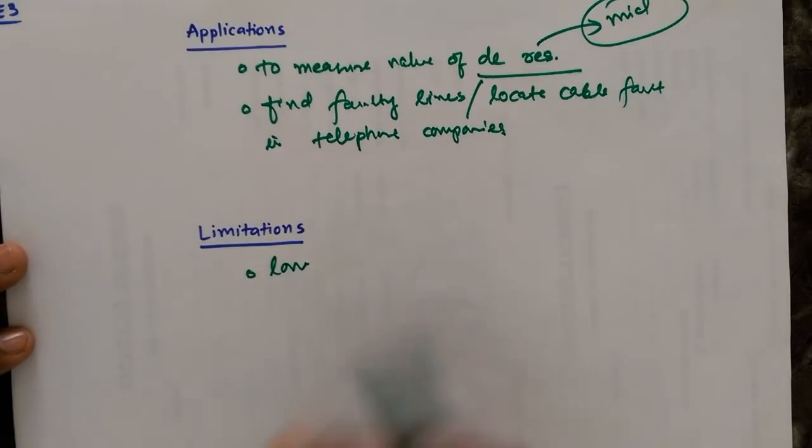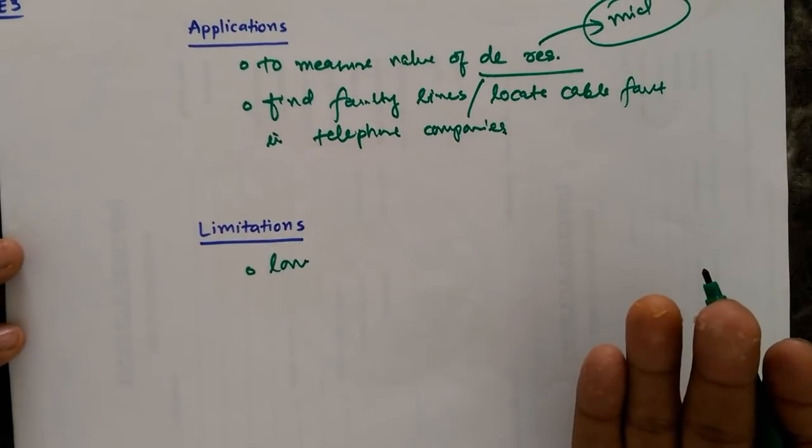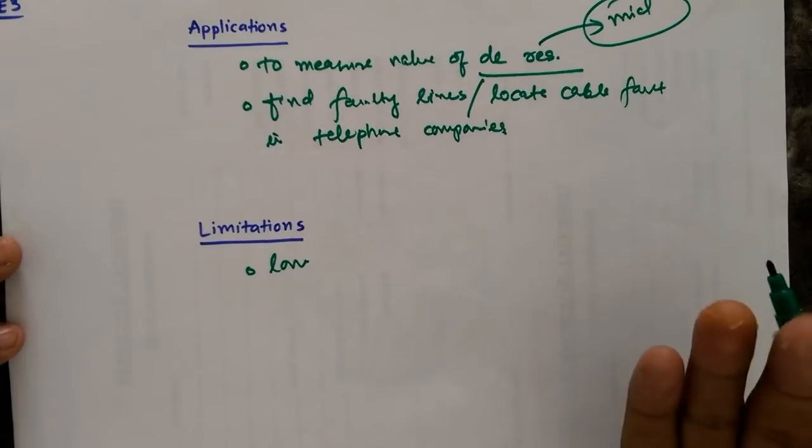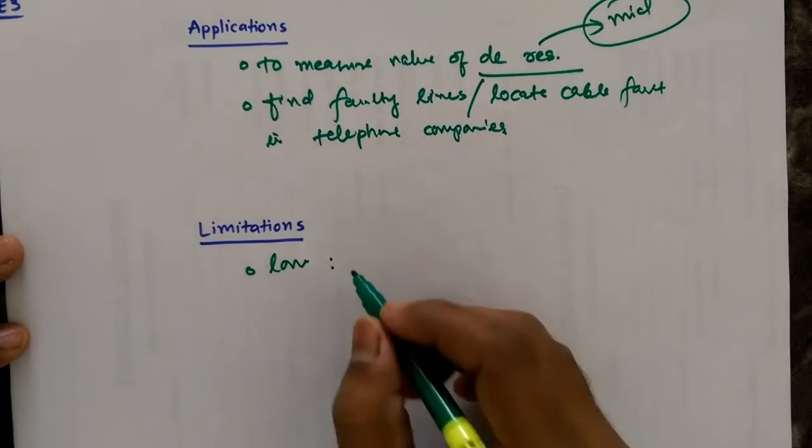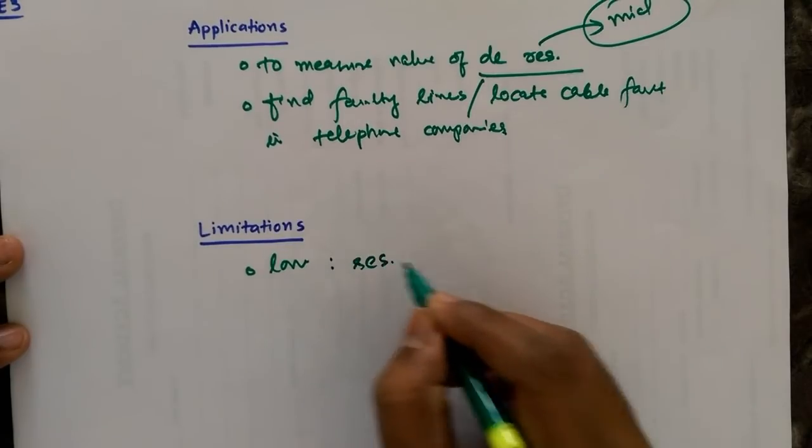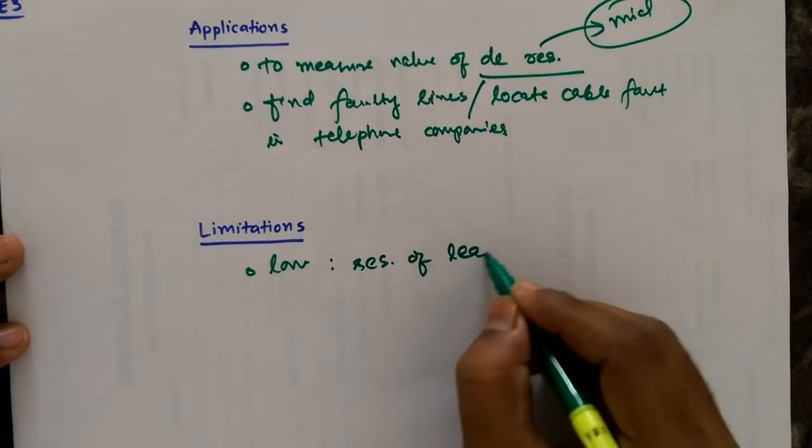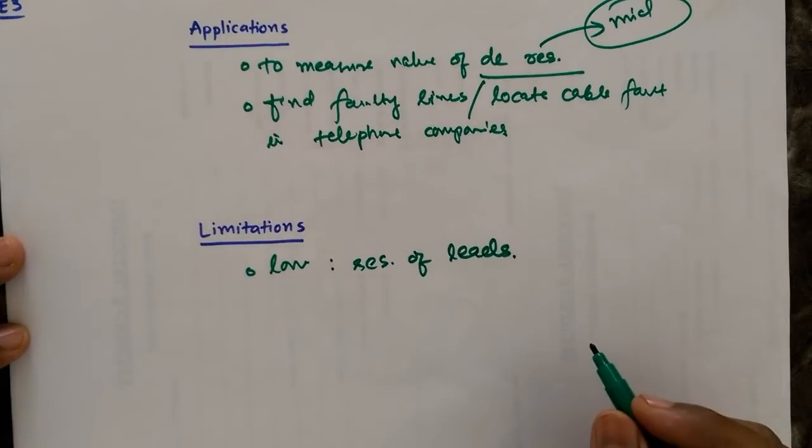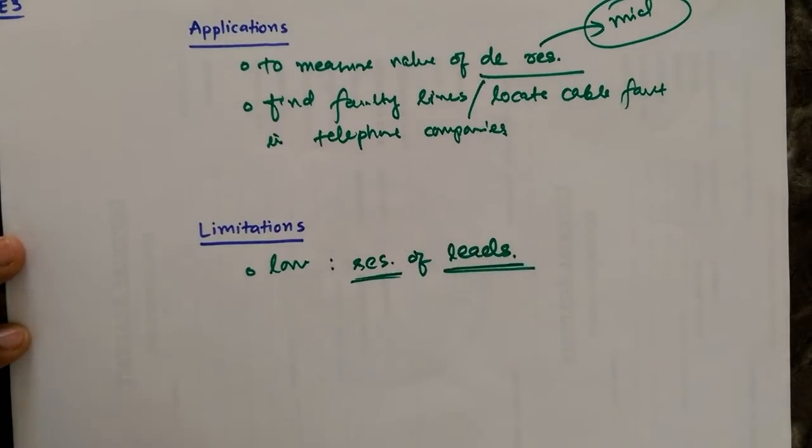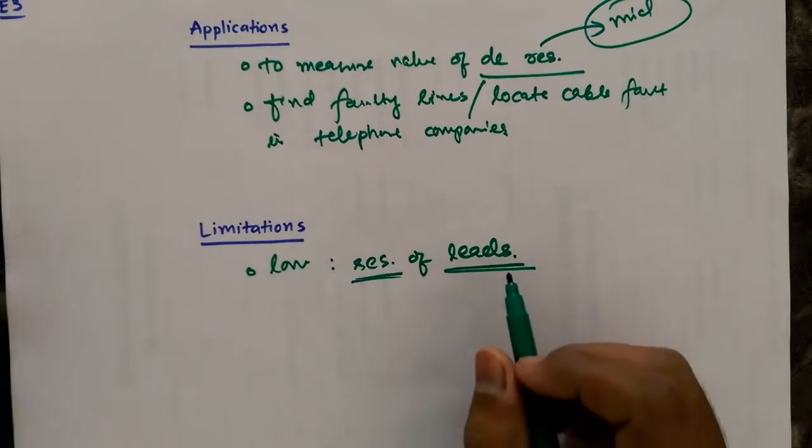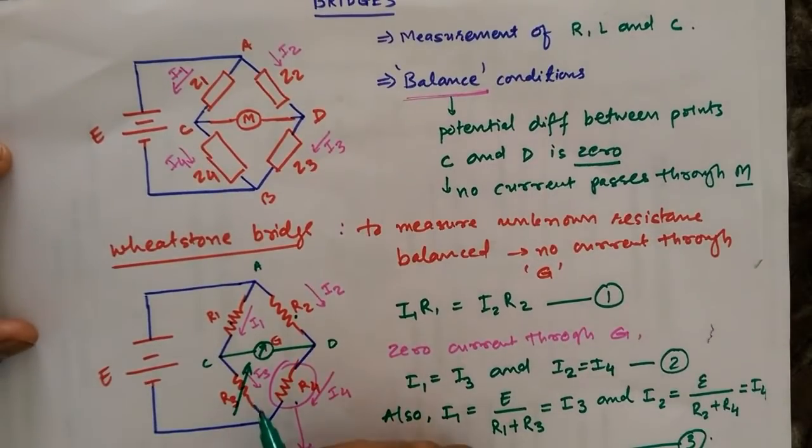But if the value of resistance you have connected is too low, then what is the problem? Why is it a limitation? So if it is too low, then the resistances of leads, the connecting leads of resistors - the resistor is not alone, it comes with leads - so that its resistance will also affect the result.